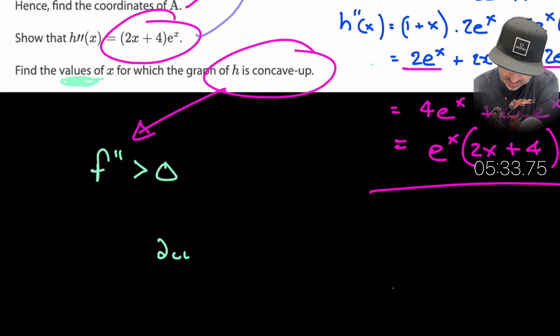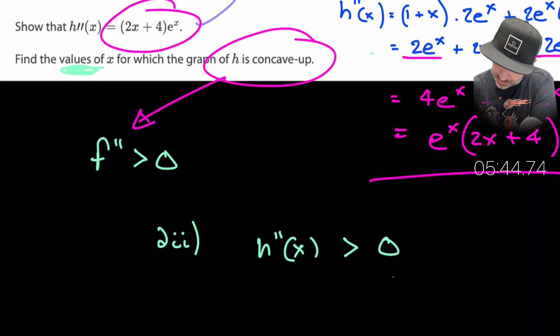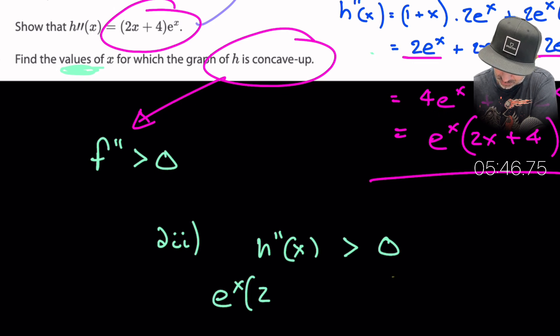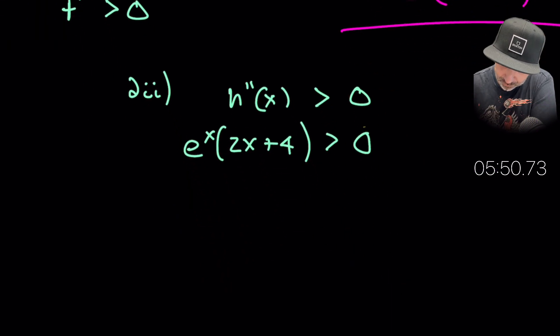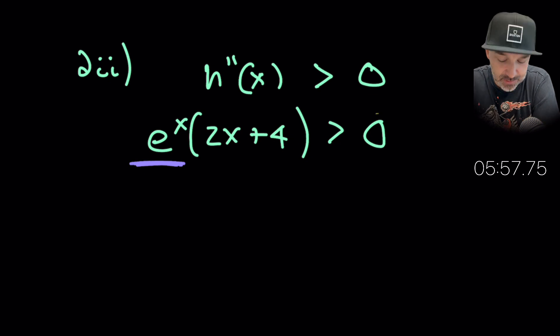So what we want to do is we want to equate this second derivative term, so I'll do this now, this is part d ii, we want to equate the second derivative term which is h double prime of x, we want this to be greater than zero. Right so we want the e^x(2x + 4) to be greater than zero. Now what we can see here is this value of e^x will always be greater than zero so we don't need to focus on that. This is going to be greater than zero, it cannot equal zero and it'll always be greater than zero.